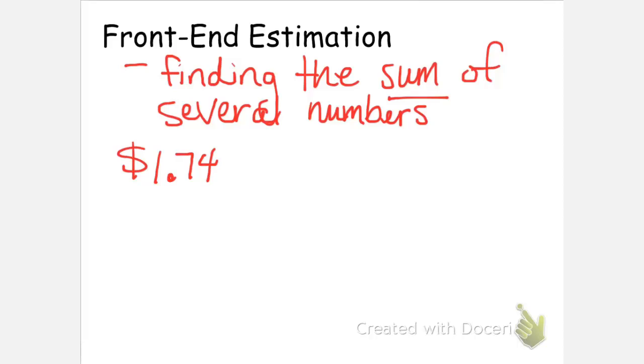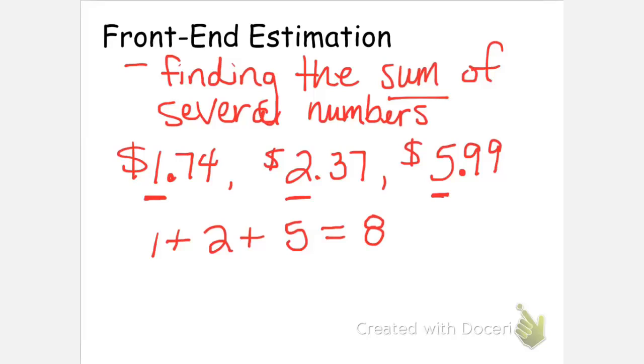So let's say we have the example that we are at the grocery store and we're going to be buying three things. The first thing we're going to buy costs $1.74. The second thing we've decided to purchase costs $2.37. And then the last thing that we throw into our cart costs $5.99. And we want to estimate the cost of these three items. And so we're going to look at the front numbers. That's why this is called front end estimation. The 1, the 2, and the 5. And we are going to add those three numbers together. And that gives us a total of 8.